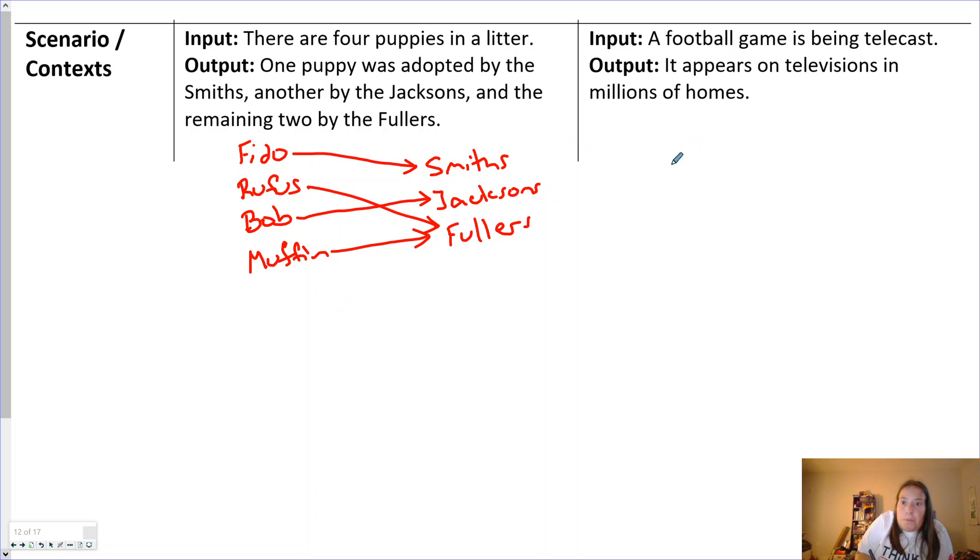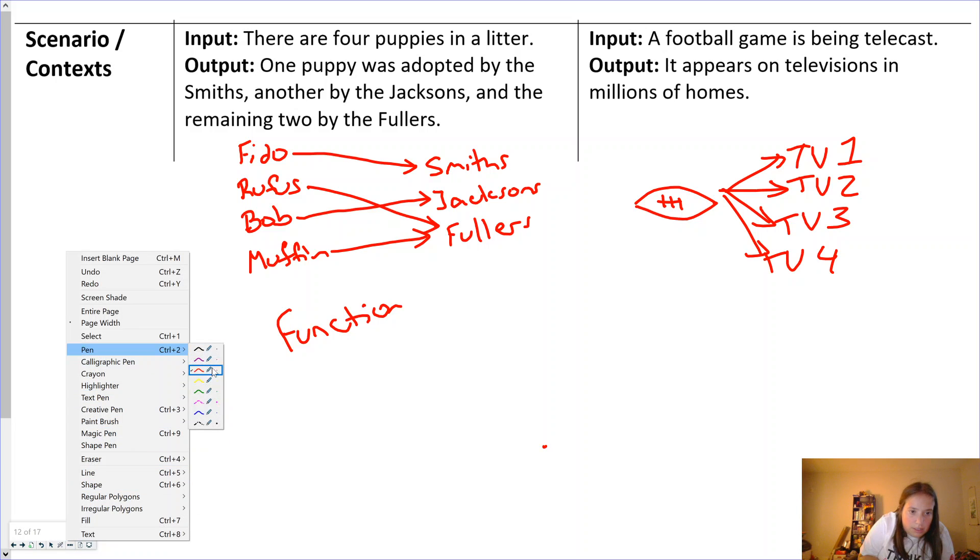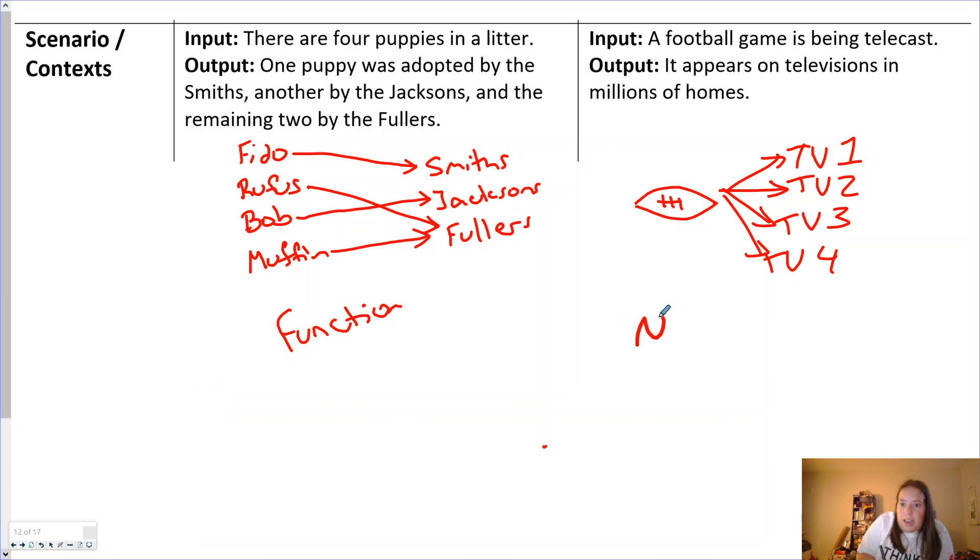But on this side, a football game. So here's the football game. And it's being shown on TV one, TV two, TV three, TV four. That one football game has so many outputs. It is not a function. Puppies going to one home, function. Football games being shown all over the world, not a function. Hope that helps.